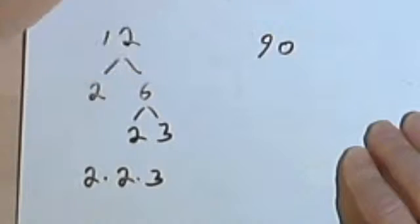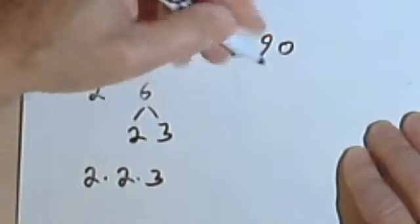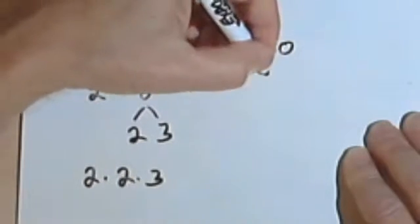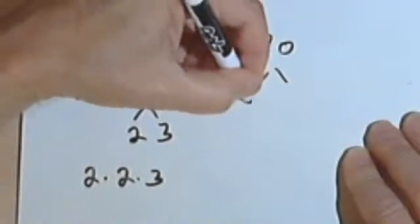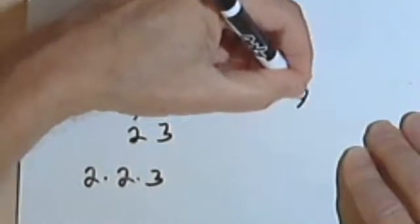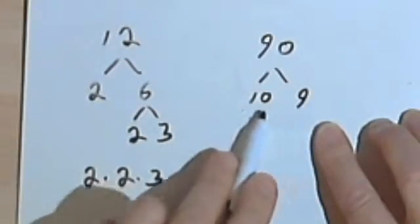Looking at the 90, I guess, well, let's divide it by 10. That looks easy. So I'm gonna have a 10 and a 9. I have to break down each of these numbers.